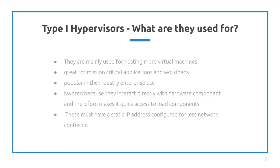So what are these hypervisors used for? As previously mentioned, they are used to host more virtual machines. For businesses, they supply mission-critical applications and workloads to ensure continuous uptime of their installation. This makes them popular in the industry for enterprise use as a whole. These are favored over type 2 hypervisors because of their direct interaction with hardware components, making for smoother and quicker access to system resources. Finally, when configuring virtual machines on type 1 hypervisors, you must enable the static IP address option to ensure known connections to the hypervisor.